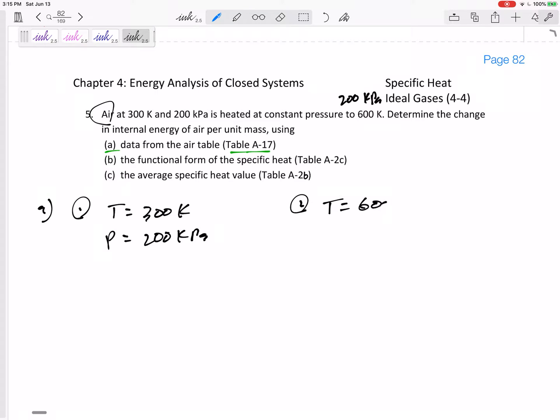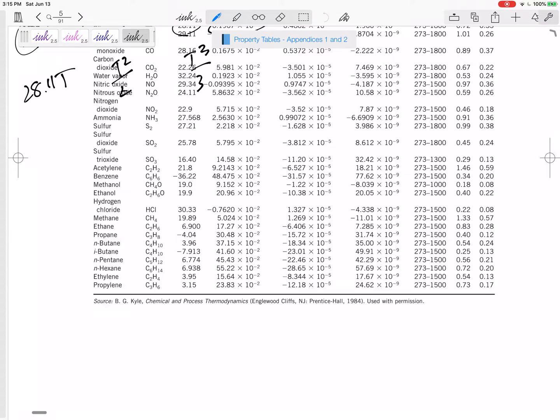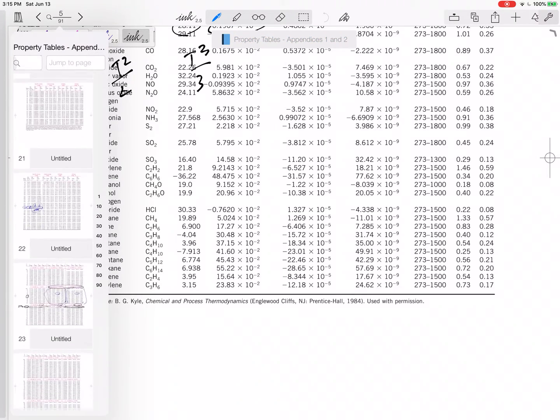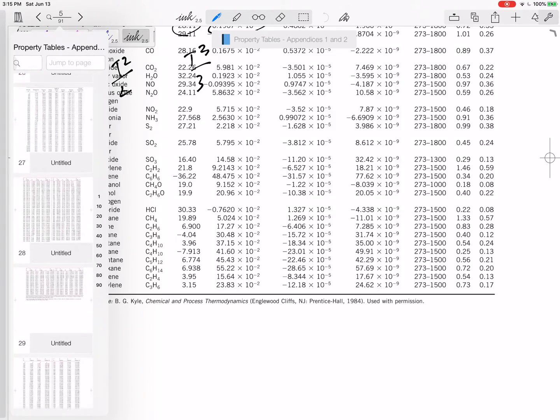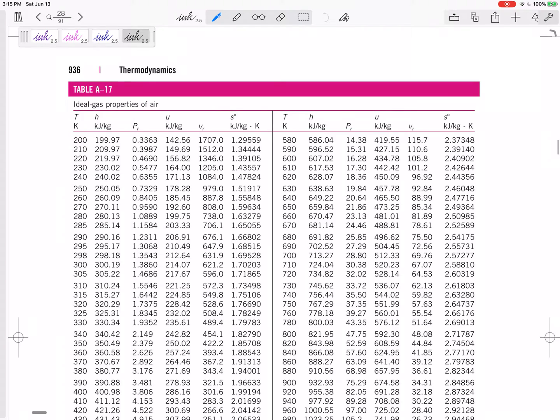State two is at a temperature of 600 K, a pressure still of 200 kPa. Go to these tables. Tables 17, 18, 19, they're just organized by temperature. Temperature is the main factor for the properties for these ideal gases.